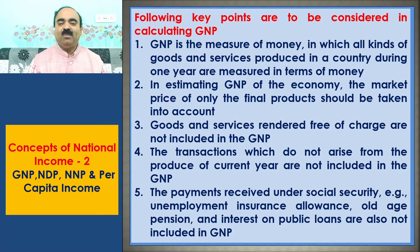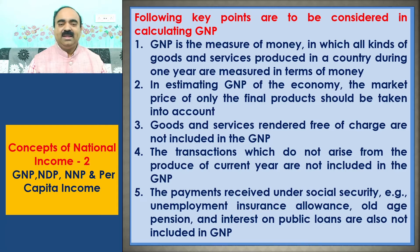GNP is the measure of money in which all kinds of goods and services produced in a country during one year are measured in terms of money. In estimating GNP of the economy, the market price of only the final products should be taken into account. Goods and services rendered free of charge are not included in the GNP.